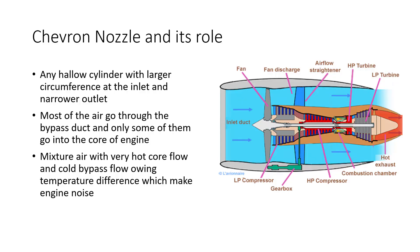A nozzle is defined as any hollow cylinder which is large in circumference at the inner side and narrower at the outlet. A turbofan engine drives 70% of its thrust from the inlet fan at the front. The air thrown back from the fan is not all sent into the compressor, but instead most of it goes through the bypass, which is the gap between the casing and the core.